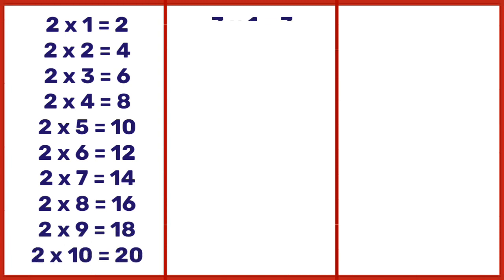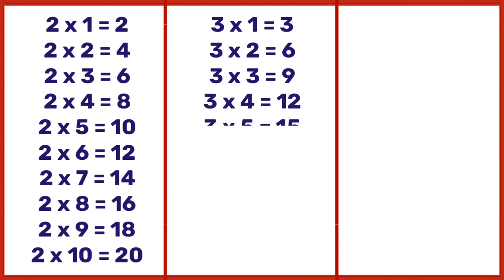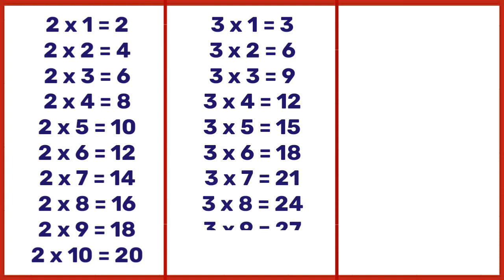3 ones are 3, 3 twos are 6, 3 threes are 9, 3 fours are 12, 3 fives are 15, 3 sixes are 18, 3 sevens are 21, 3 eights are 24, 3 nines are 27, 3 tens are 30.